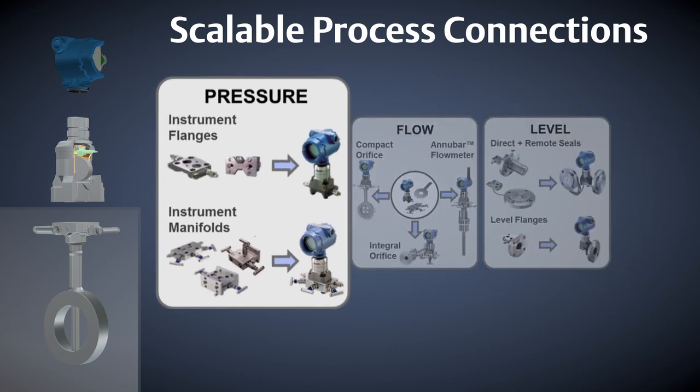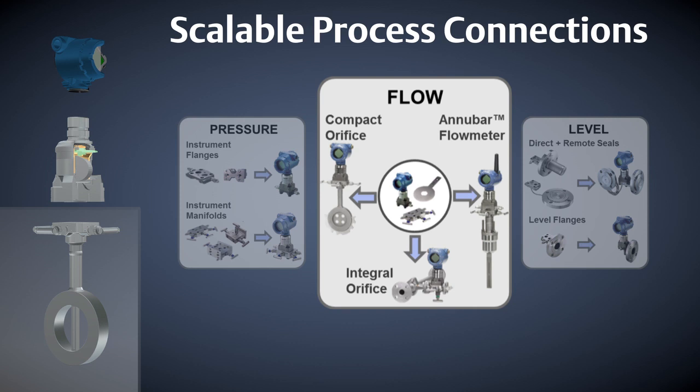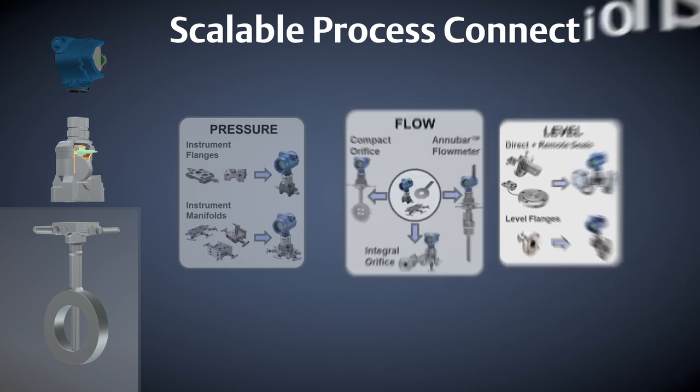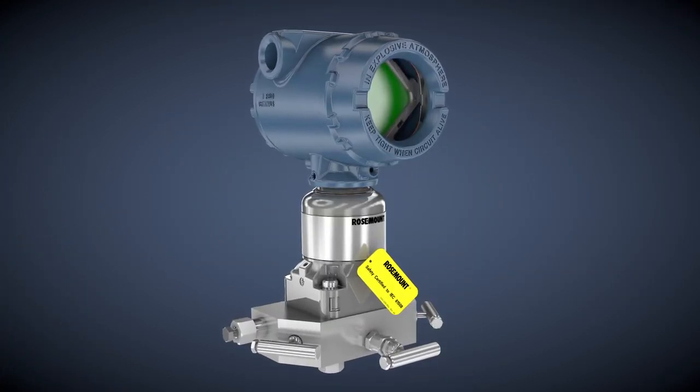These include flanges and manifolds for pressure, DP flow primaries like the Annubar averaging pitot tube, compact conditioning orifice, and integral orifice, as well as diaphragm seals and level flanges for dependable and reliable level measurement.